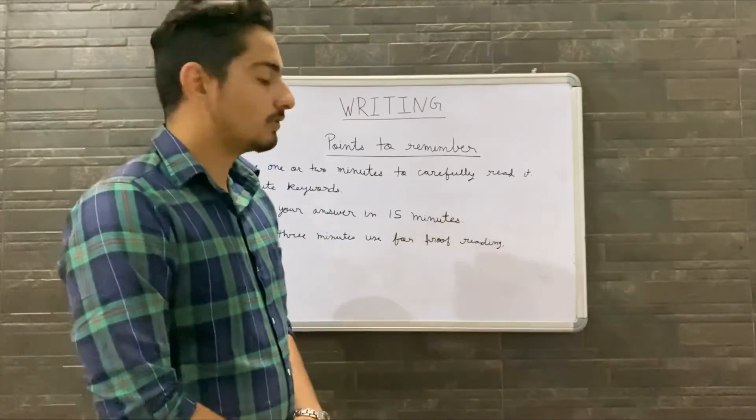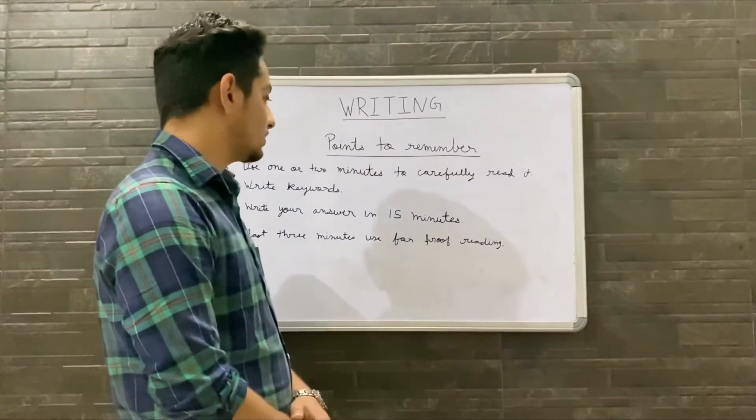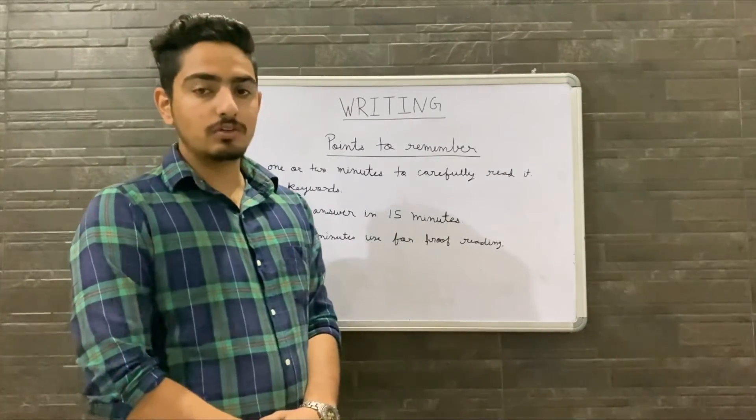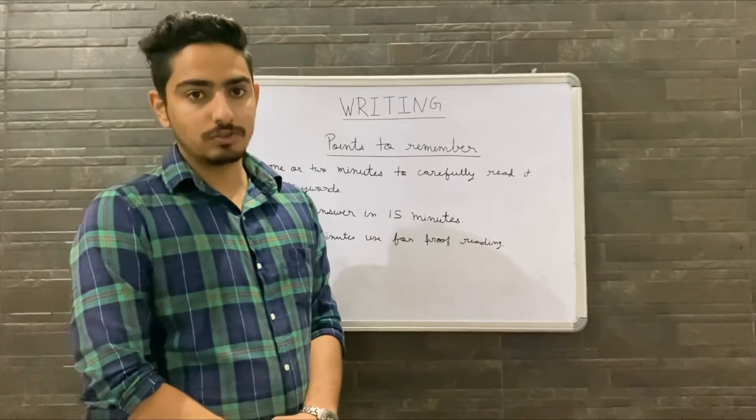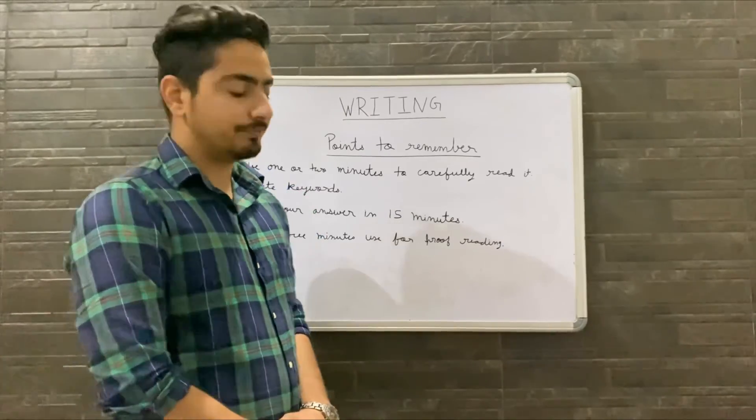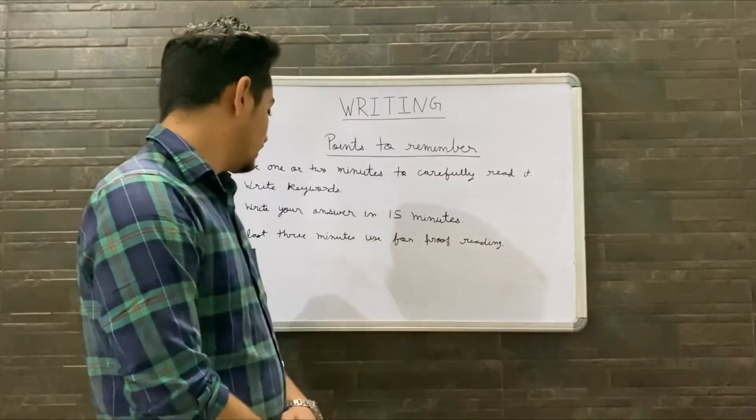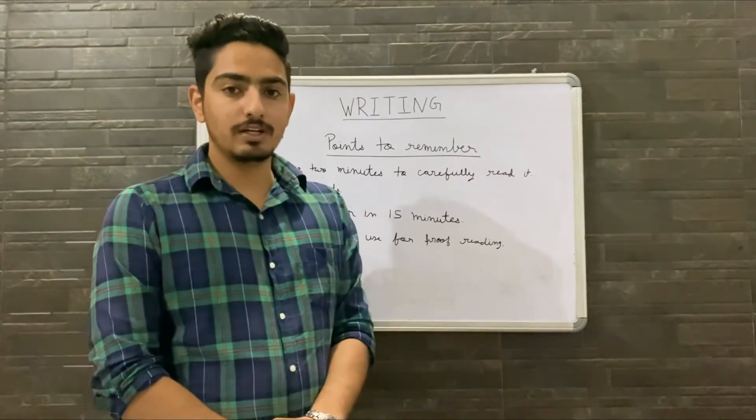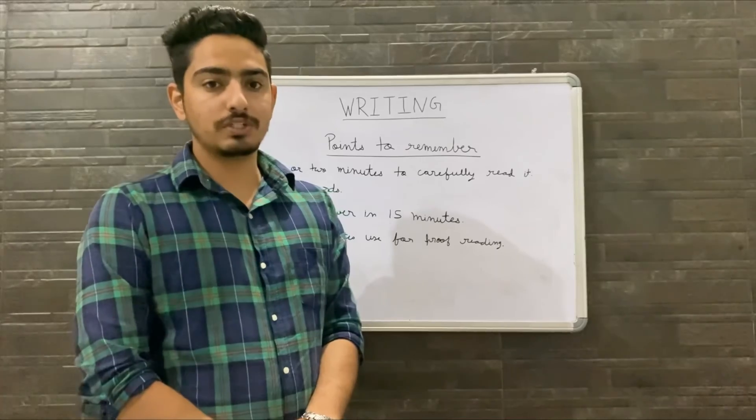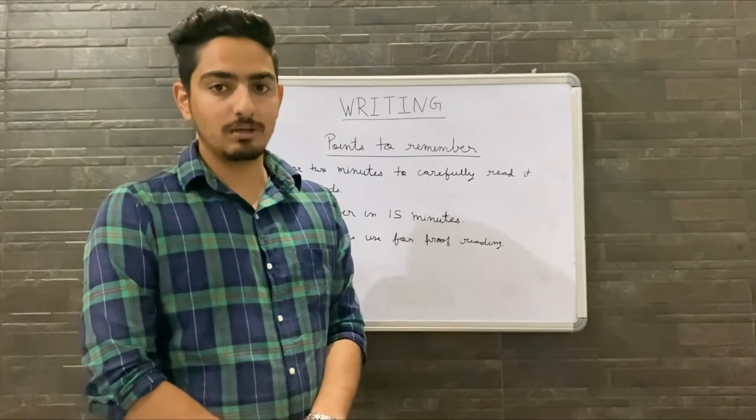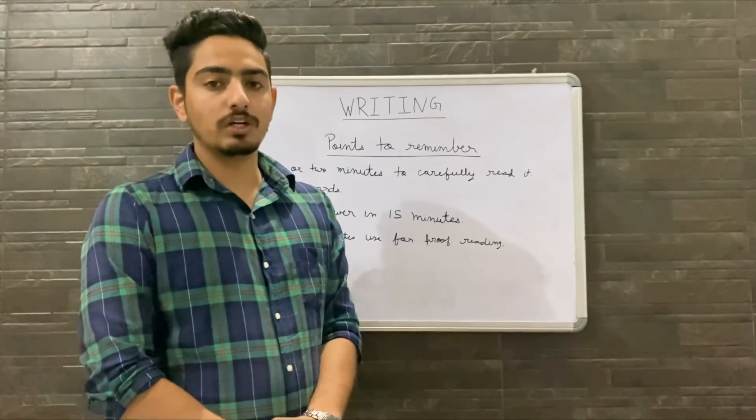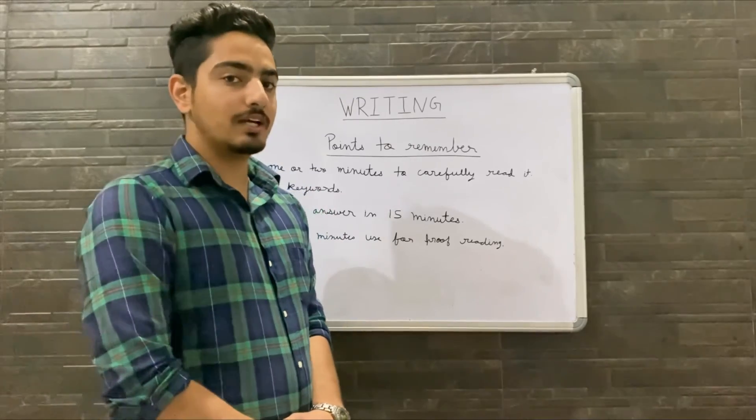Third point, write your answer in 15 minutes so that you have remaining time. Last but not least, use the last three minutes to proofread it. You have to check that there is no spelling mistake, no other mistake, no grammar mistake, so you can easily get your desired score.